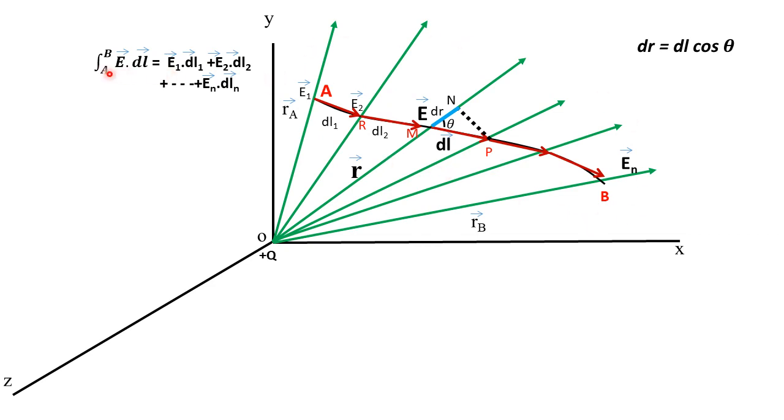So you have to calculate line integral of electric field from point A to point B. The position vector of point A with respect to origin O is R_A and electric field intensity at point A is E_1. We will take one such point M where electric field intensity is E and its position vector with respect to source charge is R.